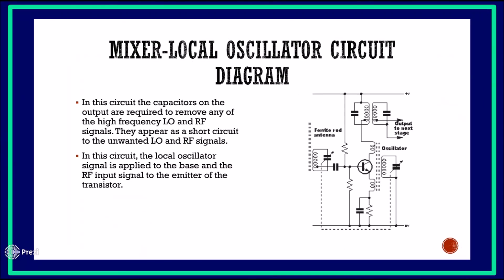Next comes the mixer and local oscillator circuit diagram. In this circuit, the capacitors on the output are required to remove any of the high-range local oscillator and radio frequency signals, appearing as a short circuit to those unwanted signals. The local oscillator signal is applied to the base, and the radio frequency input signal to the emitter of the transistor.